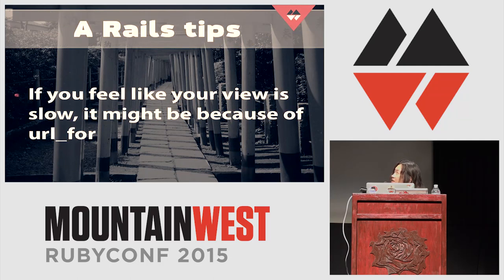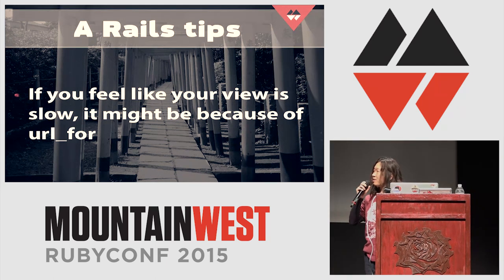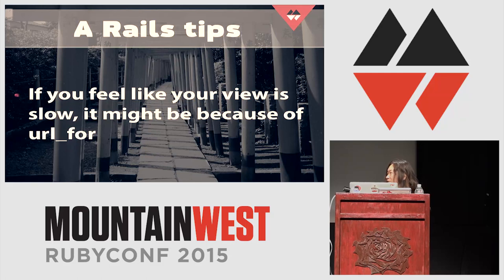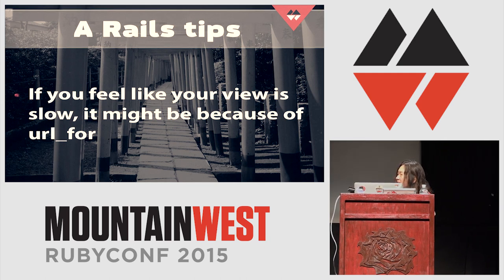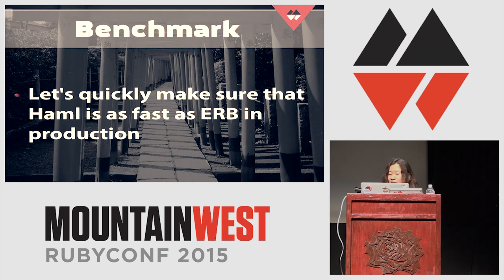By the way, if you think Rails views are slow, it's probably because url_for is slow. My advice is to avoid using dynamic URL generation like url_for and link_to. These methods might be very slow — we're going to fix it in Rails 5, probably. Anyway, let's make sure my assumption was right. Let's compare Haml and ERB and confirm that Haml is not very slow.